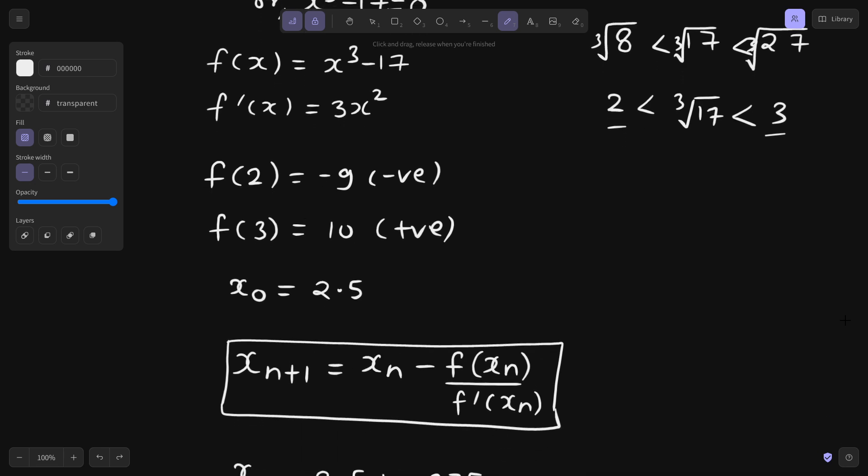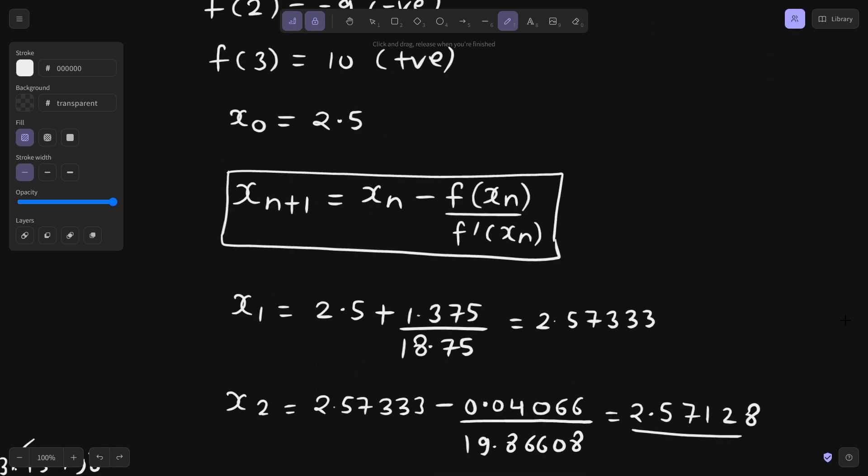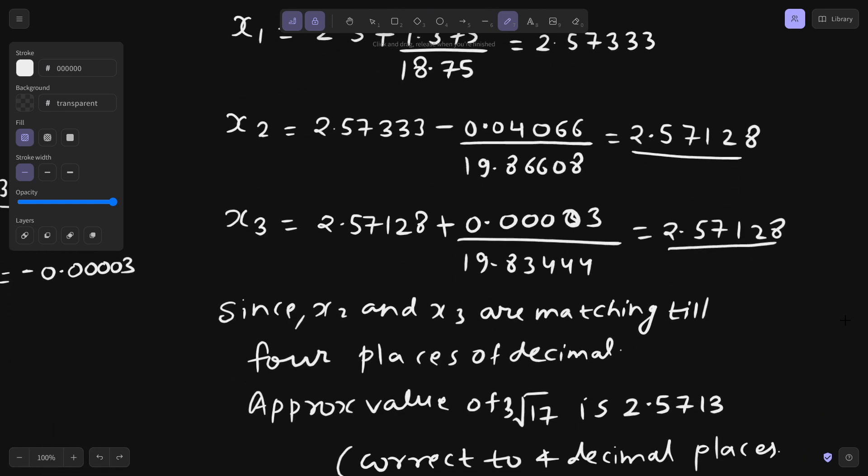We chose x0 as mid value which is 2.5. Then the iterative formula xn plus 1 equals to xn minus value of function divided by derivative of function and in second and third iteration were matching to 5 decimal places. So we concluded that the root of cube root, root means the solution of x cube minus 17 equals to 0 is 2.5713 correct to 4 decimal places. So that's it for today. You can watch out more problems in the playlist iterative techniques and interpolation. Thanks a lot.